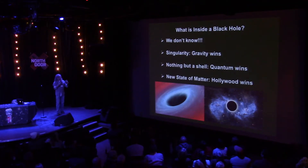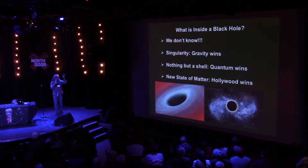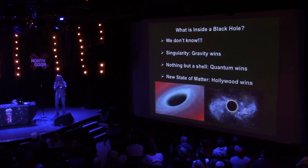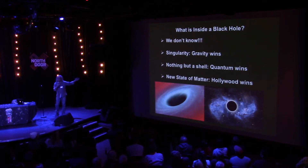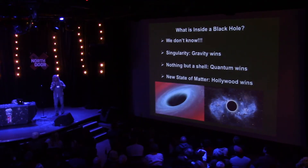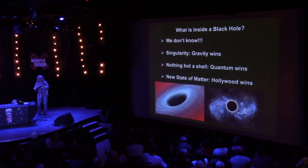Another idea is that it could be nothing but a shell — this is where quantum mechanics wins. This is the idea Stephen Hawking came up with: a quantum firewall around the edge of the black hole. You never reach through — you just have a sphere, and in that sphere is a quantum state where all the material is deposited. There's nothing you can access from our universe. Then there's the idea of a new state of matter on the inside — this is where Hollywood goes nuts: you fly in, travel to other universes, visit your grandmother from long ago. That's not really a possibility, but that's one idea Hollywood has. Fundamentally, we don't know what goes on inside of a black hole.